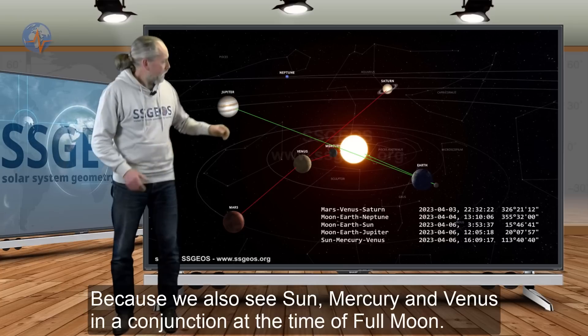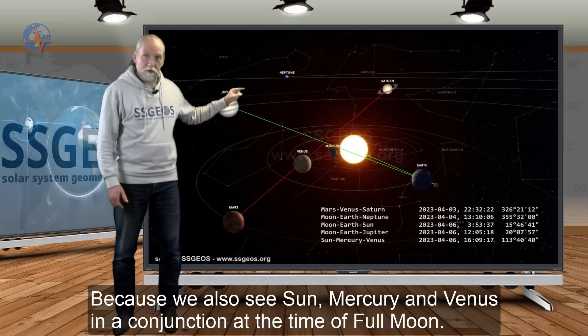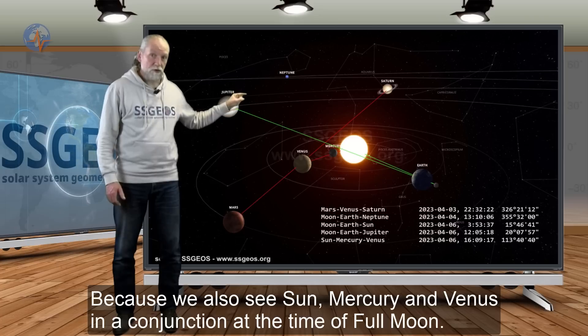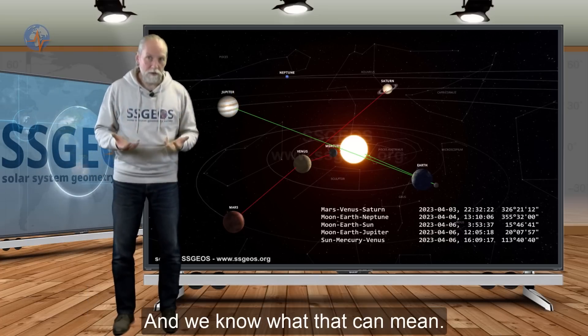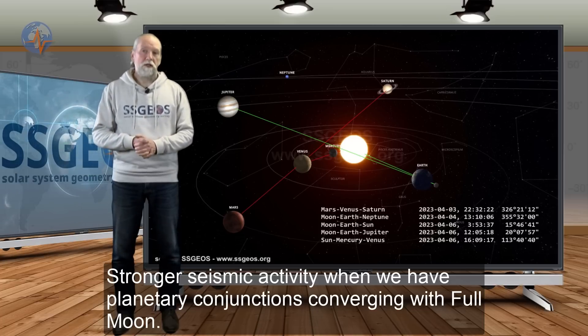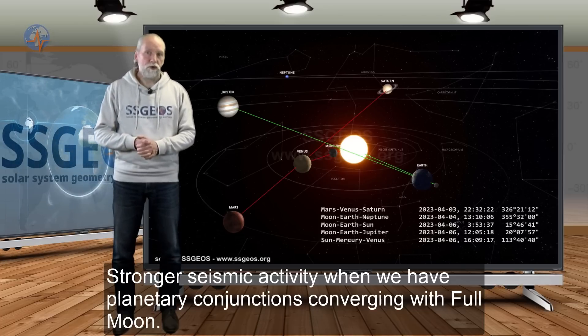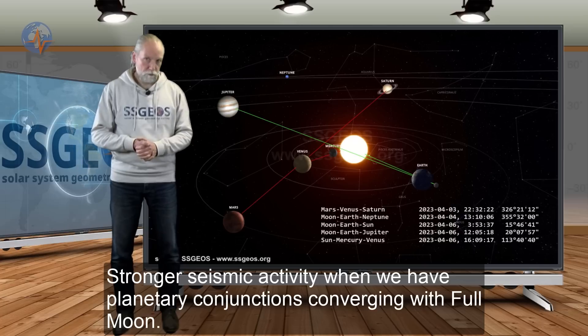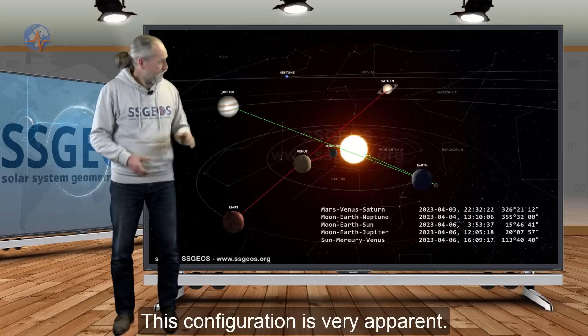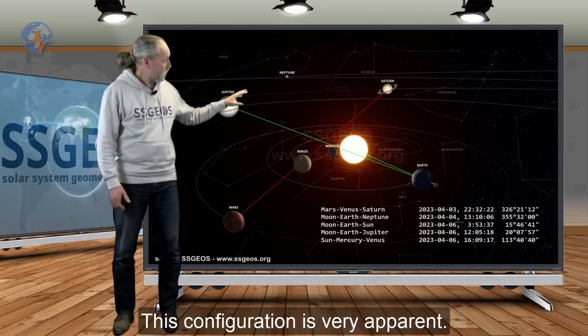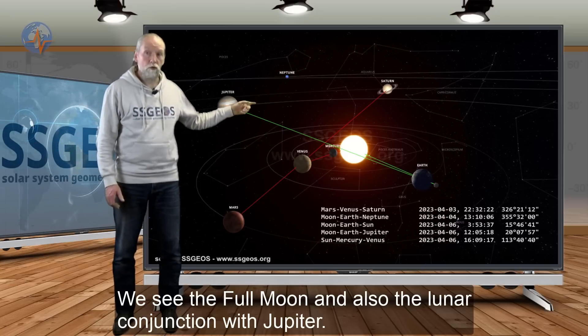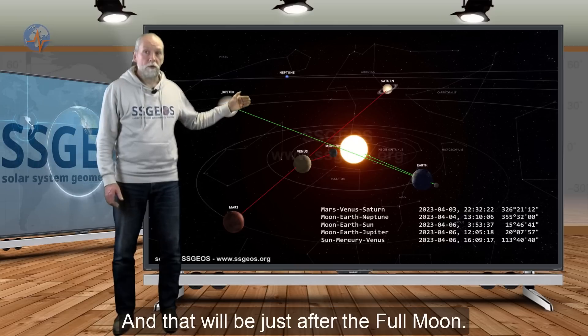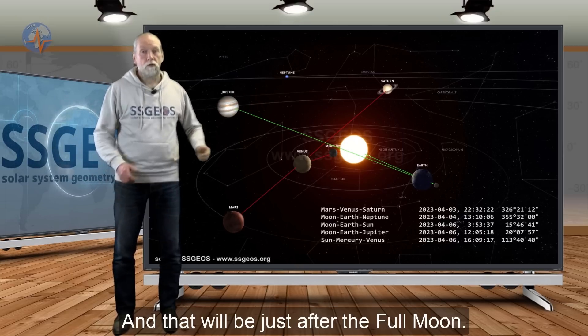And that will make it critical because we also see Sun, Mercury, and Venus in a conjunction at the time of full moon, and we know what that can mean: stronger seismic activity when we have planetary conjunctions converging with the full moon. And this configuration here is very apparent. We see the full moon and also the lunar conjunction with Jupiter, and that will be just after the full moon.